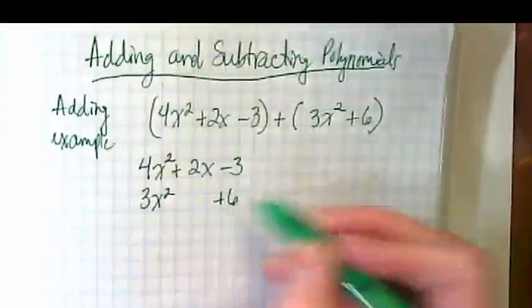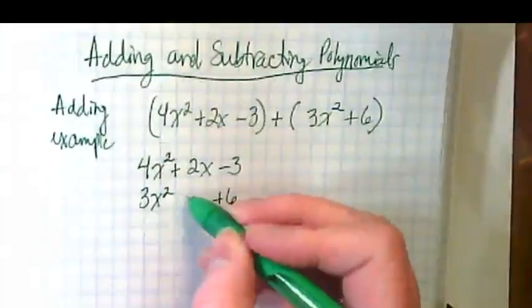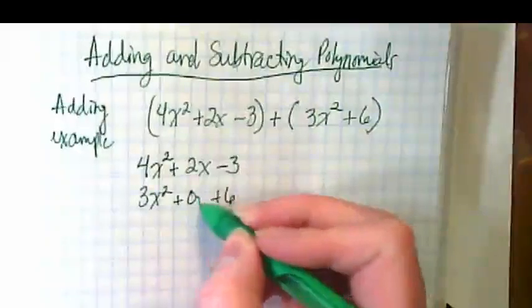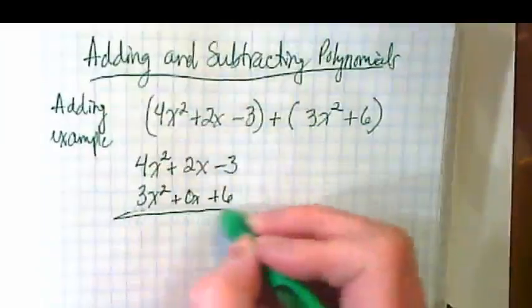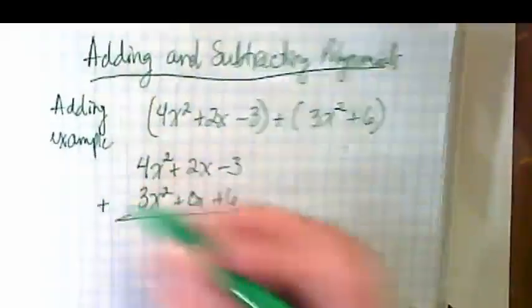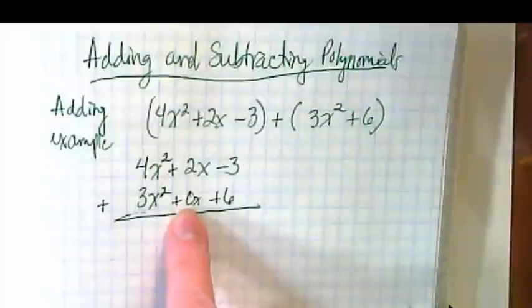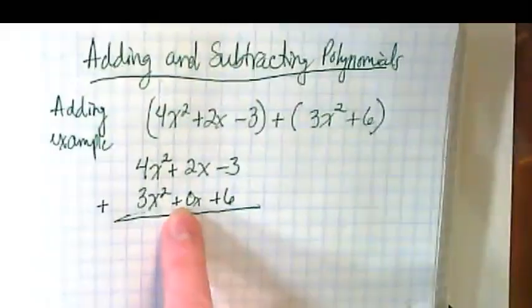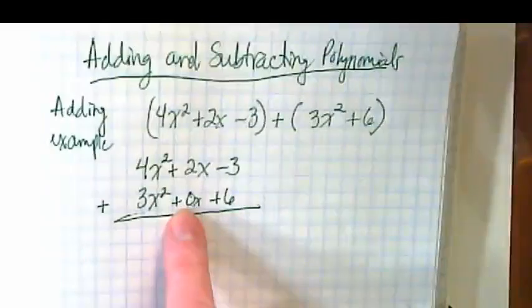And then there is no other term, so I could put a 0 here or a 0x to hold it. This right here is the part you don't have to do, but I find the people who put a 0 here don't make mistakes.